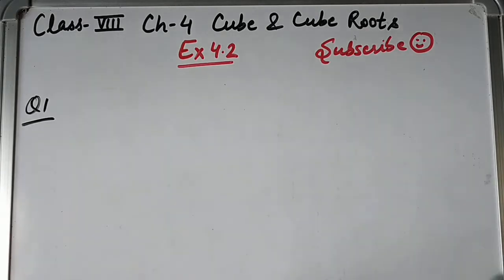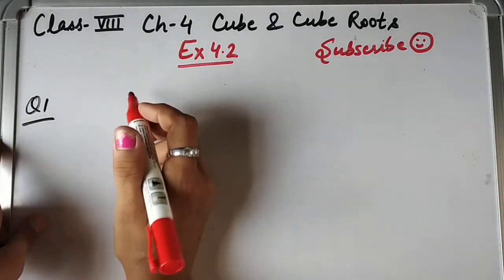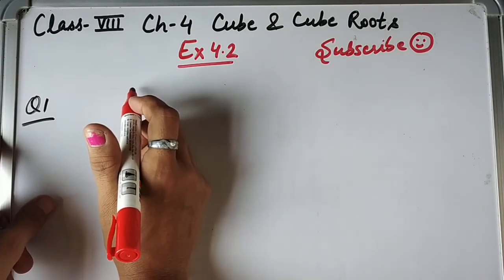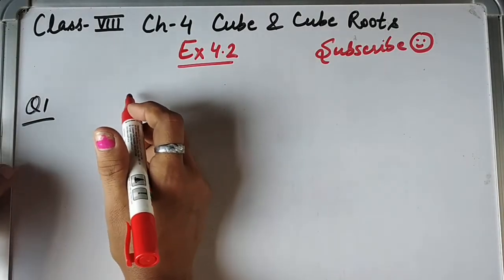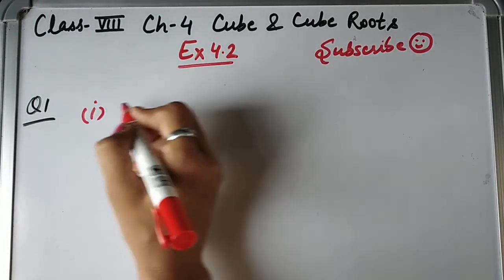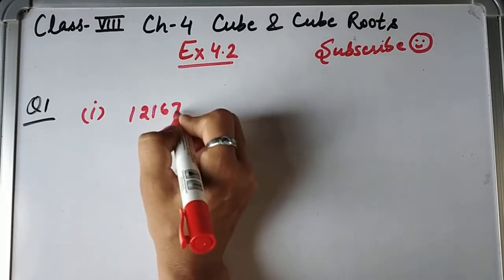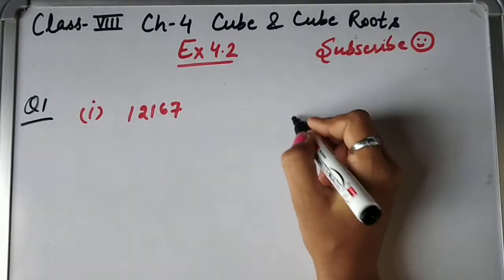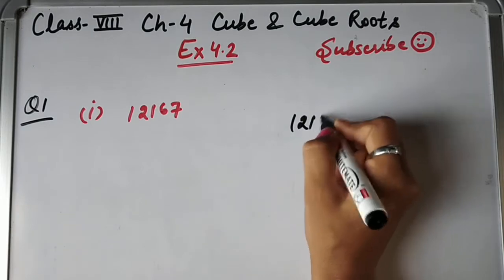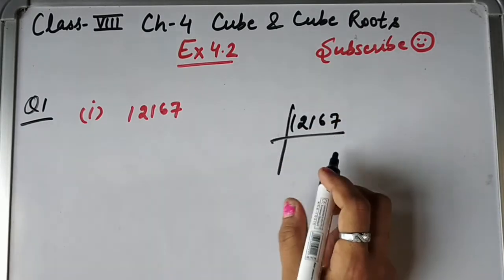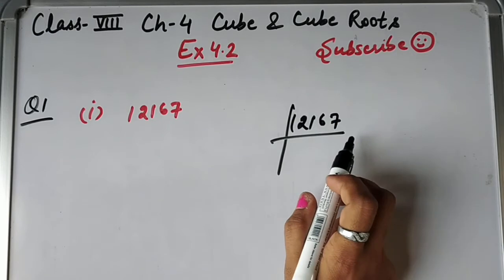Now in Question 1, we have to find the cube root of each of the following numbers by prime factorization. The first number is 12167. We need to find its cube root, so first of all, we will do prime factorization of 12167.